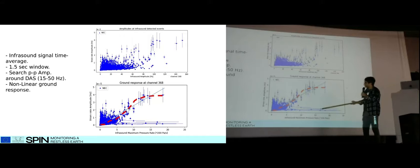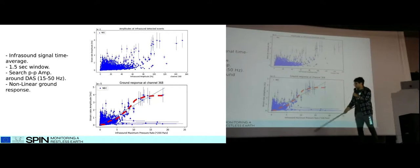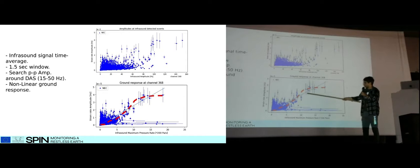However, if we derivate the signal of the infrasound and we obtain the pressure rate, now what we are seeing is that there are some points scattered that try to go outside of a linear tendency. It means that now we are seeing actually a possible non-linear behavior.